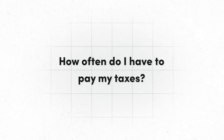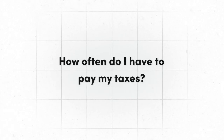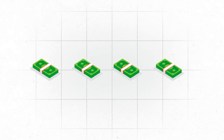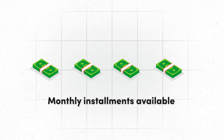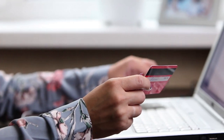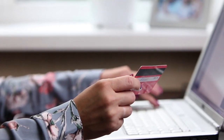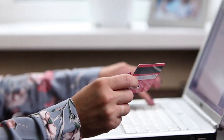How often do I have to pay my taxes? There are four installment payments due each year, but residents can also pay monthly through our pre-authorized payment plan or through various financial institutions or mortgage companies.